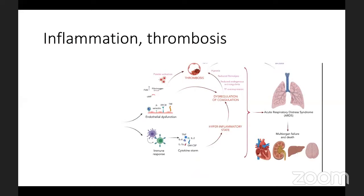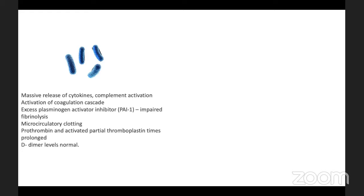At the basic level, there are two essential pathways through which the virus causes harm: thrombosis, and an immune response with cytokine release. In bacterial sepsis and viral infections like COVID-19, the clotting cascade gets activated. There is also inhibition of fibrinolytic activity due to excessive plasminogen activator inhibitor, leading to microvascular clotting. This classically results in prolonged prothrombin time and activated partial prothrombin time, but D-dimer levels are normal in bacterial sepsis.